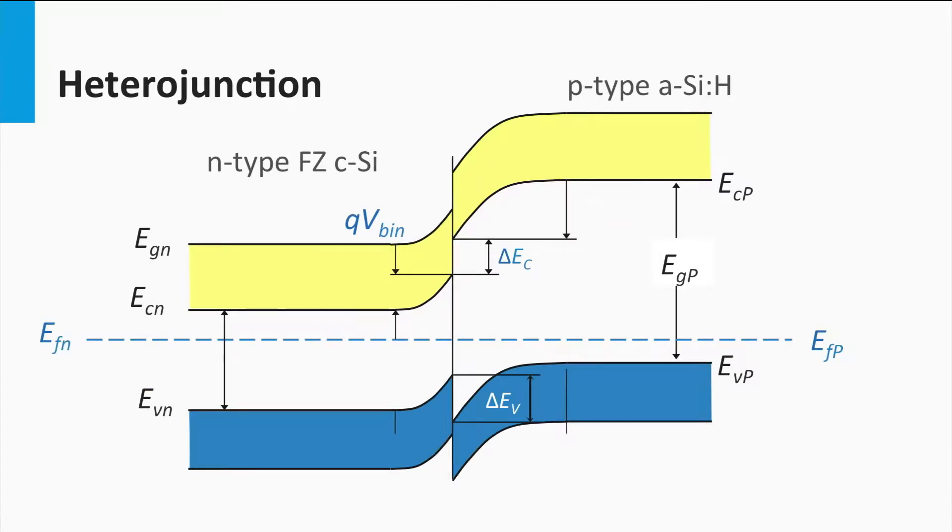However, you can also make a junction by two different semiconductor materials. For instance, one semiconductor material that is P-doped and another type of semiconductor material that is N-doped. This is what we call a heterojunction.